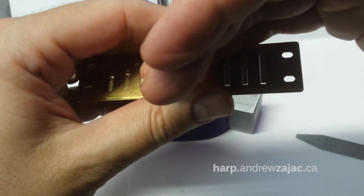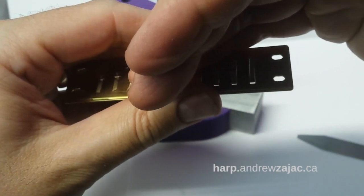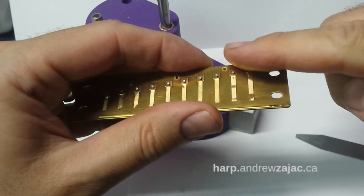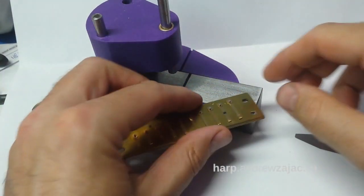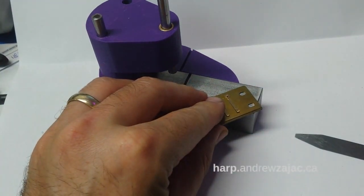All right, now, let's say that you got the reed in. And here's a common problem. The reed is crooked in the slot. So how are we going to straighten that out?